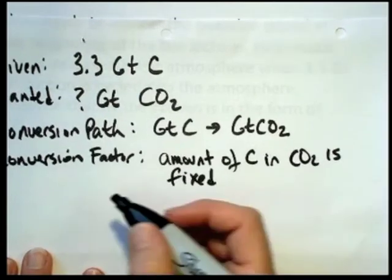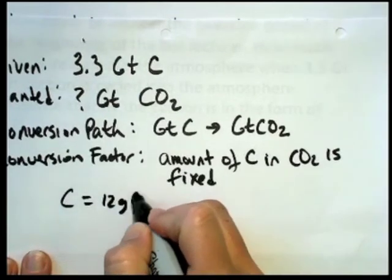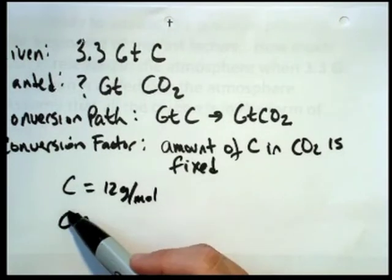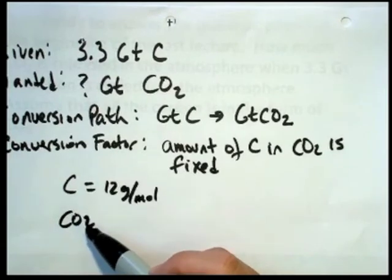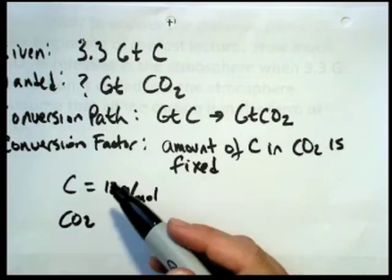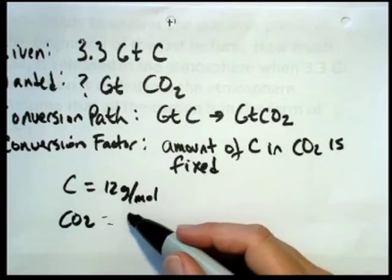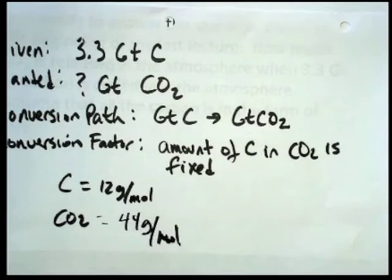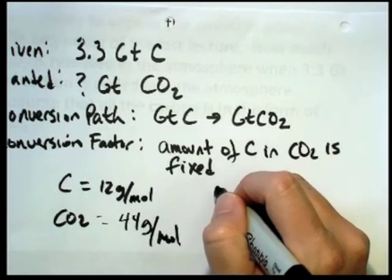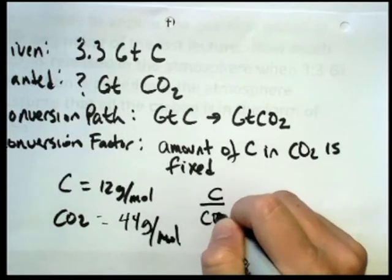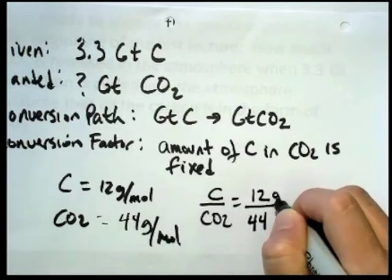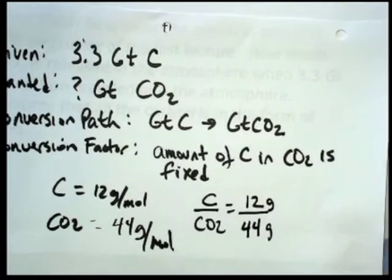So the conversion factor is coming from the fact that the amount of carbon in carbon dioxide is fixed. If carbon from the periodic table is about 12 grams per mole, I'm rounding off here, carbon dioxide is going to be the mass of the carbon plus two oxygens. And rounding off from the periodic table, oxygen is about 16 and we have two of them. So that would be 16 plus 16 plus 12, you can do that in your head, that's about 44 grams per mole.